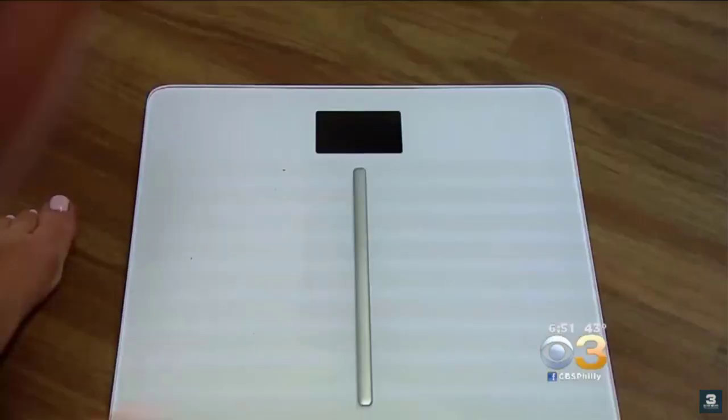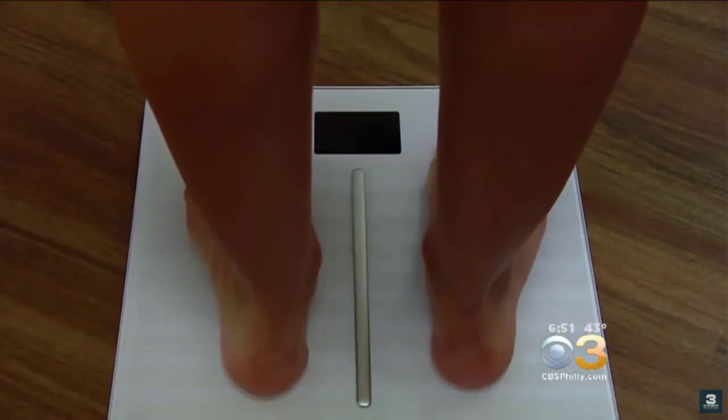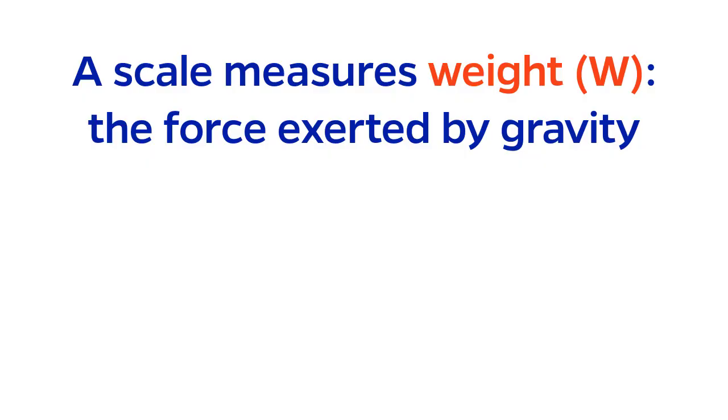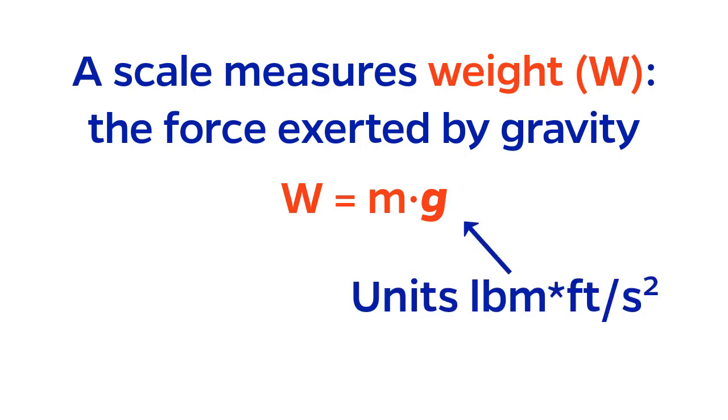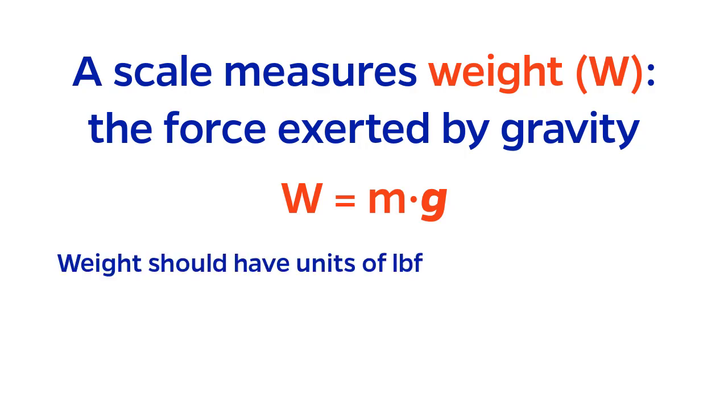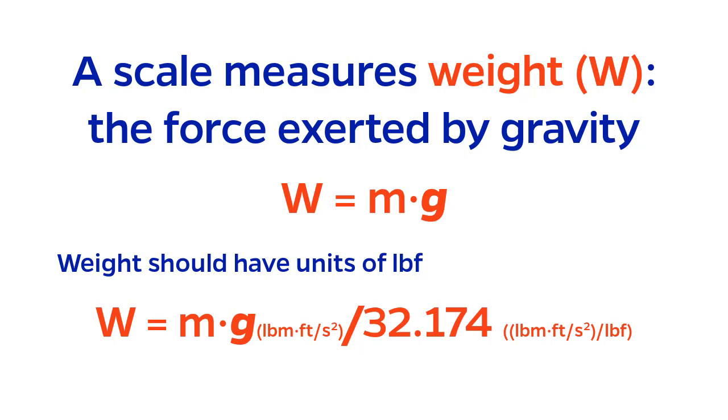To understand why this matters, consider stepping on a scale. This machine is literally measuring your weight, the force that gravity exerts on you. You learned in physics class that weight is equal to mass times the acceleration due to gravity. However, the unit of this measurement is pound mass feet per second squared. To convert it into a force, we have to divide by the conversion factor. Don't worry if this step is confusing to you. We're going to come back to this later.